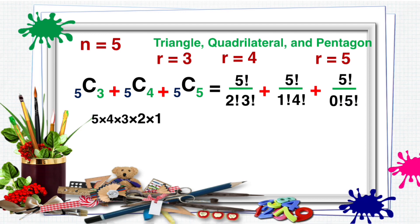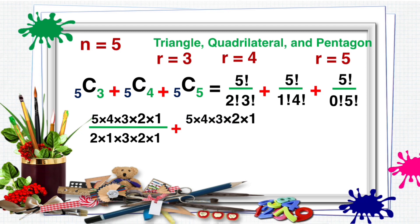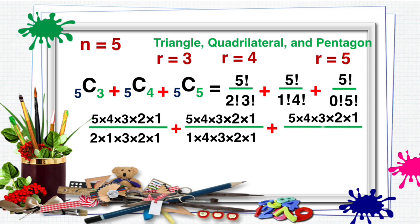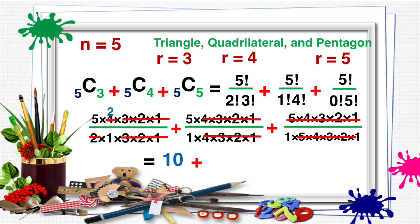Split all factorial notations. That is: 5 times 4 times 3 times 2 times 1, all over 2 times 1 times 3 times 2 times 1; plus 5 times 4 times 3 times 2 times 1, all over 1 times 4 times 3 times 2 times 1; plus 5 times 4 times 3 times 2 times 1, all over 1 times 5 times 4 times 3 times 2 times 1. Cross out 3 times 2 times 1, divide 4 and 2 to get 2. Cross out 4 times 3 times 2 times 1, then cross out 5 times 4 times 3 times 2 times 1. The remaining numbers give 10 plus 5 plus 1. Therefore, 16 polygons can be formed from 5 distinct points.